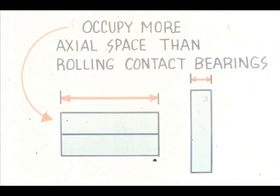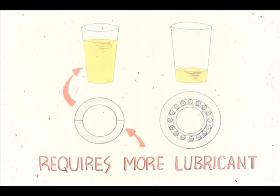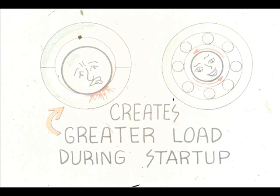One of the disadvantages of sleeve bearings is that they require more axial, or linear, space than a comparable rolling contact bearing. Another disadvantage is that they generally require considerably more lubricant than a comparable rolling contact bearing. Sleeve bearings also create a greater load on the driver during start-up, since the shaft is riding directly on the bearing, at which time there is a greater chance of damage to the shaft journal than would be the case where rolling contact bearings are used.